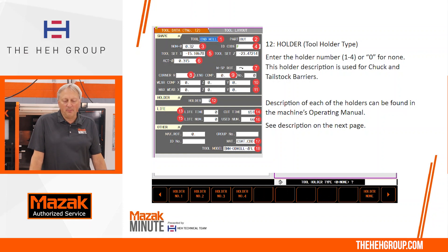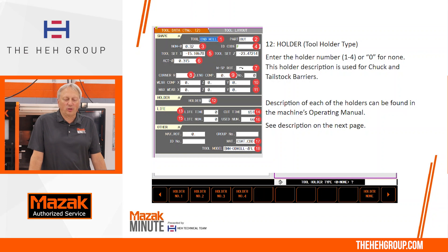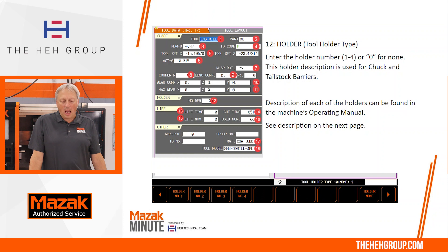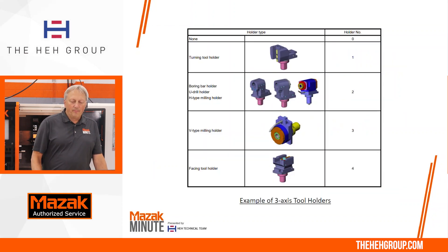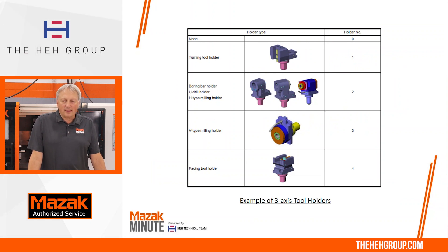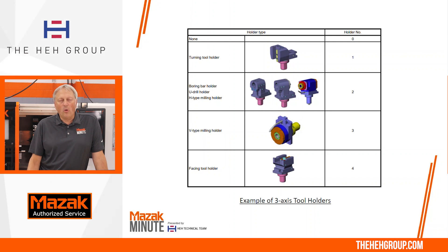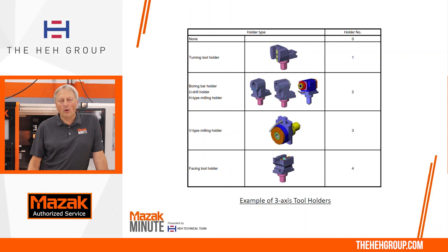Number twelve is going to be the holder type. Here we can enter a holder number between one and four, or zero for none. This holder description is used for chuck and tailstock barriers. Descriptions of each holder can be found in the machine-specific operating manual. On a three-axis machine: turning tool holder is number one, horizontal milling head is number two, vertical milling head is number three, and a facing holder is number four.